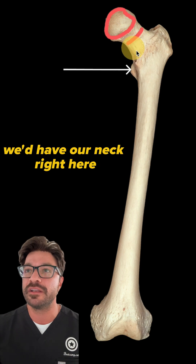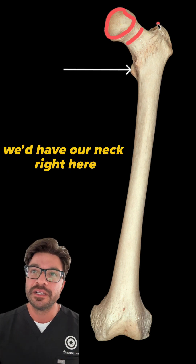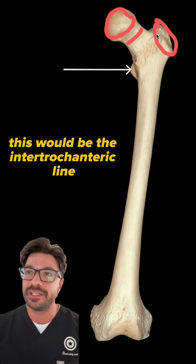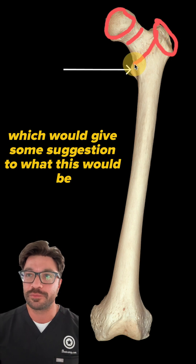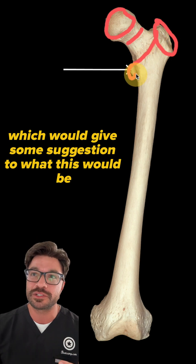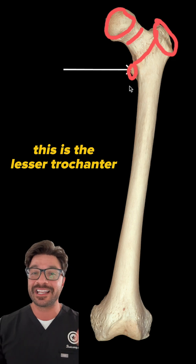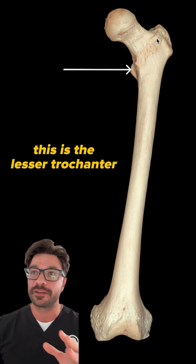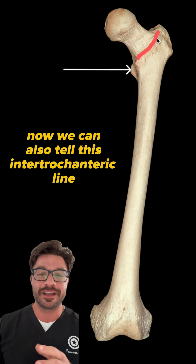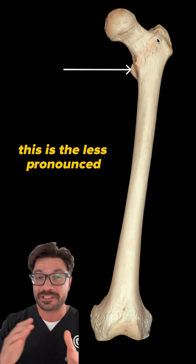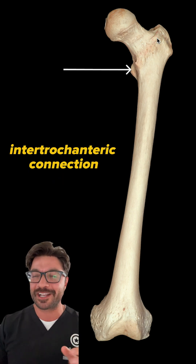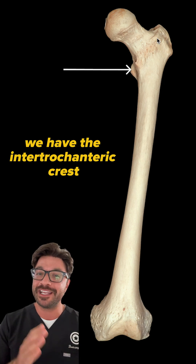Right here would be the head of the femur, and we'd have our neck right here. This would be our greater trochanter, and this would be the intertrochanteric line, which gives some suggestion to what this would be right here — this is the lesser trochanter.